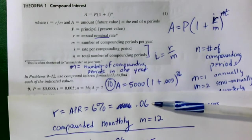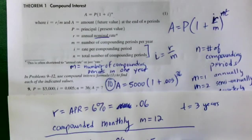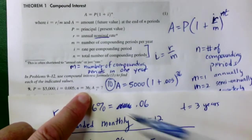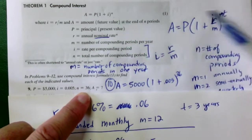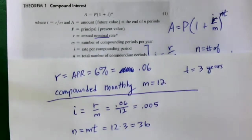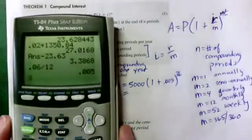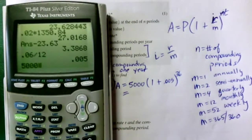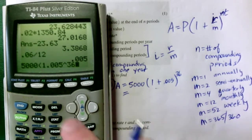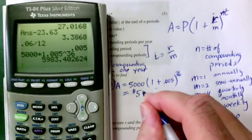If they give you the annual interest rate and the compounding factor instead of I and N directly, you calculate I as 0.005 and N as 36 yourself. So we plug in: 5,000 times 1.005 to the 36th power. This always gives the total amount — the future value — after compounding.